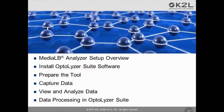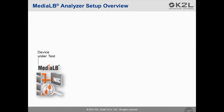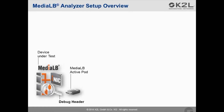The first section of this tutorial introduces the MediaLB analyser setup. Let's have a look at the individual components of such a setup. First of all, there is your device under test, which has a MediaLB connection between the on-PCB iNIC and the controller running your application. A specific debug header is needed to plug in the MediaLB active pod. Please make sure that the high-speed debug header is implemented on your PCB, as recommended in the MediaLB specification. The header can be left unpopulated in production, but it is absolutely essential for debugging during development.